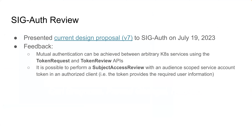Essentially, they told us that mutual authentication can be achieved between two arbitrary Kubernetes services using the token request and token review APIs. Interesting. So it's possible, and the token we get back has enough information — the user information field — so we can do a subject access review.